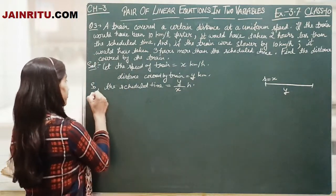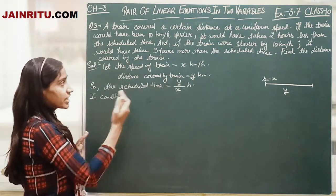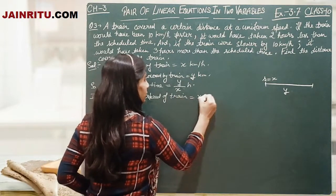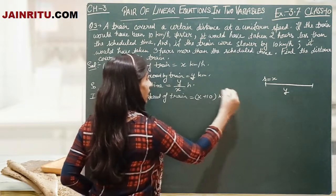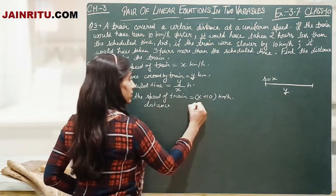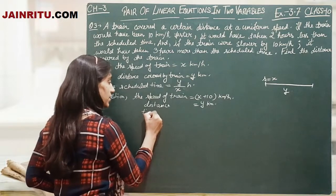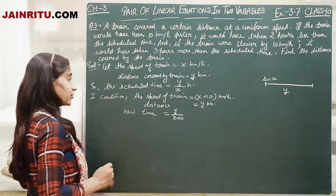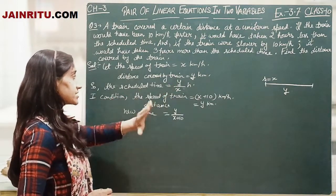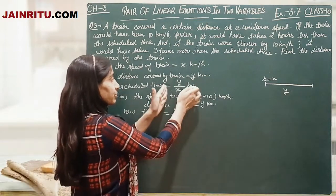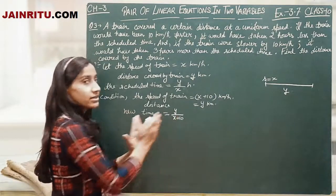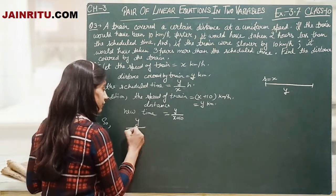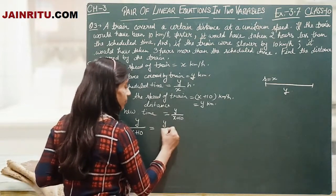Now here is the first condition: the speed of the train equals x plus 10 km per hour. The distance is the same, y km. So the new time taken is y upon x plus 10. The new time y upon x plus 10 is 2 hours less than the scheduled time y upon x.